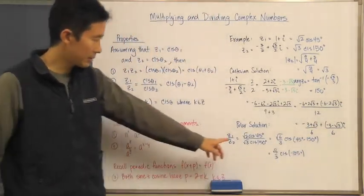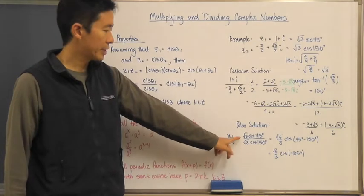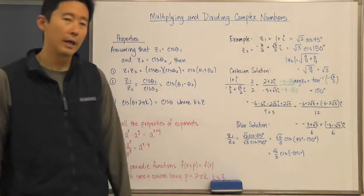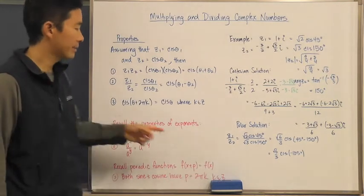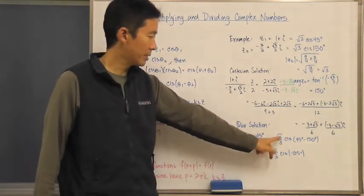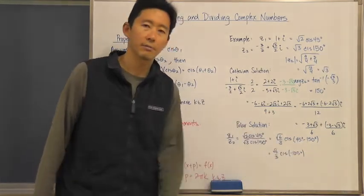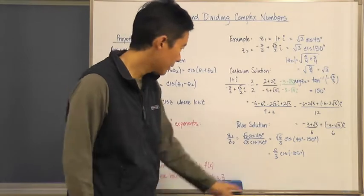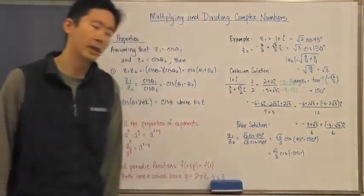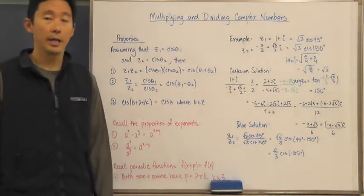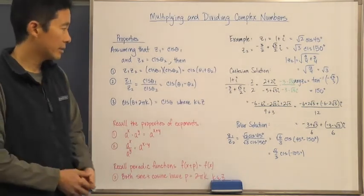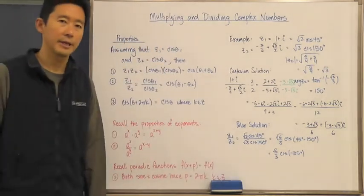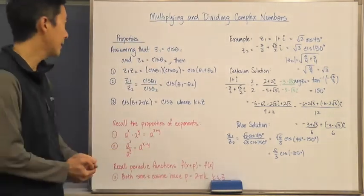The polar solution is much simpler: √2 cis 45° over √3 cis 150°. Using property two, this becomes (√6 / 3) cis(45° − 150°), which is (√6 / 3) cis(−105°). Again, I invite you to verify that both results are equivalent values.